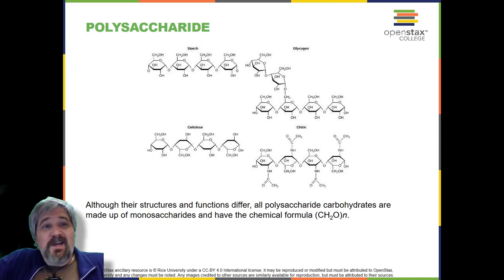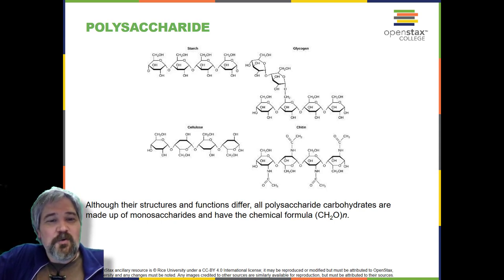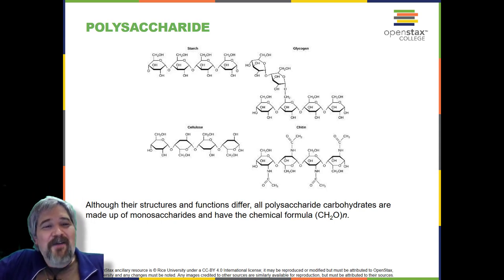Now, that doesn't mean that we can eat cellulose and extract that carbon in the form of glucose. Oh, and I'm about to explain why that is, or who can do it, at least. Every other glucose monomer in cellulose is flipped over and packed tightly as extended long chains. This gives cellulose its rigidity and high tensile strength, which is so important to plant cells.